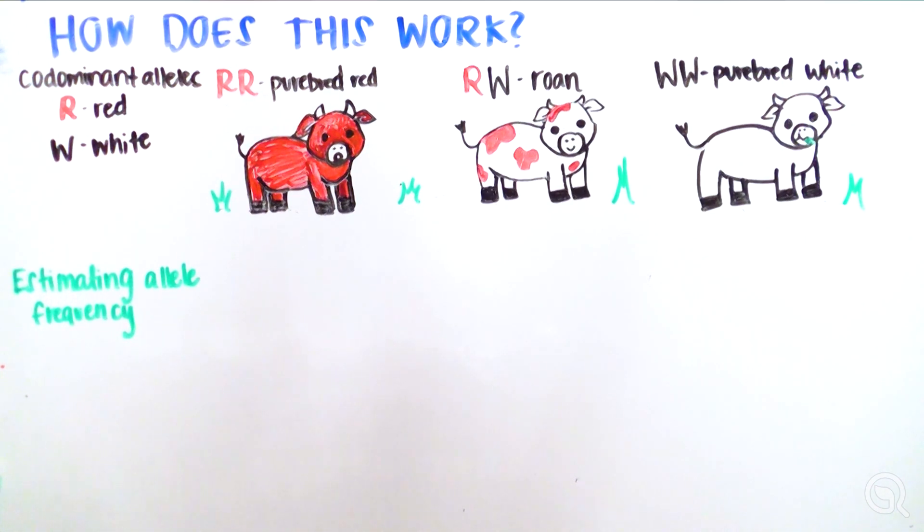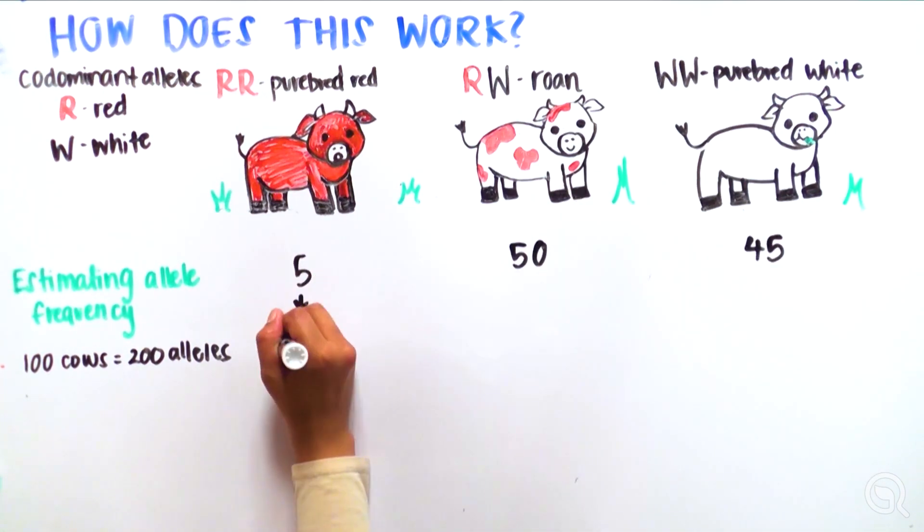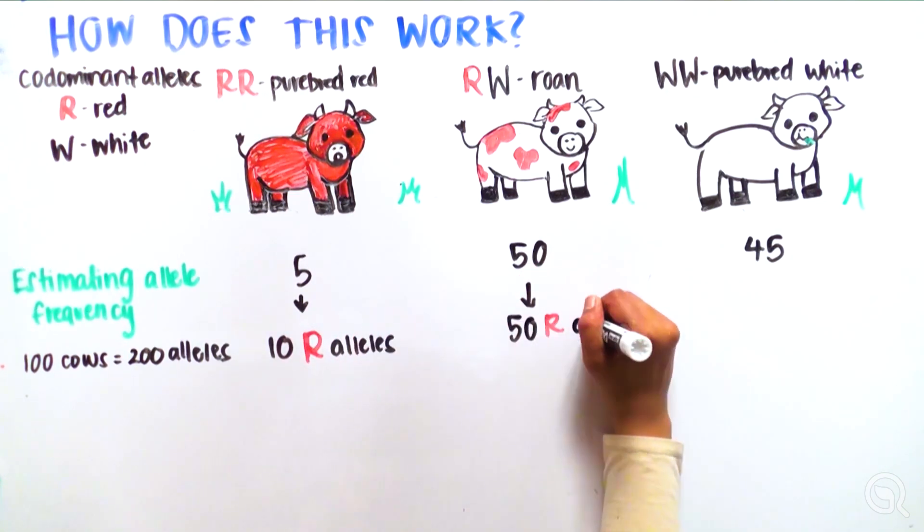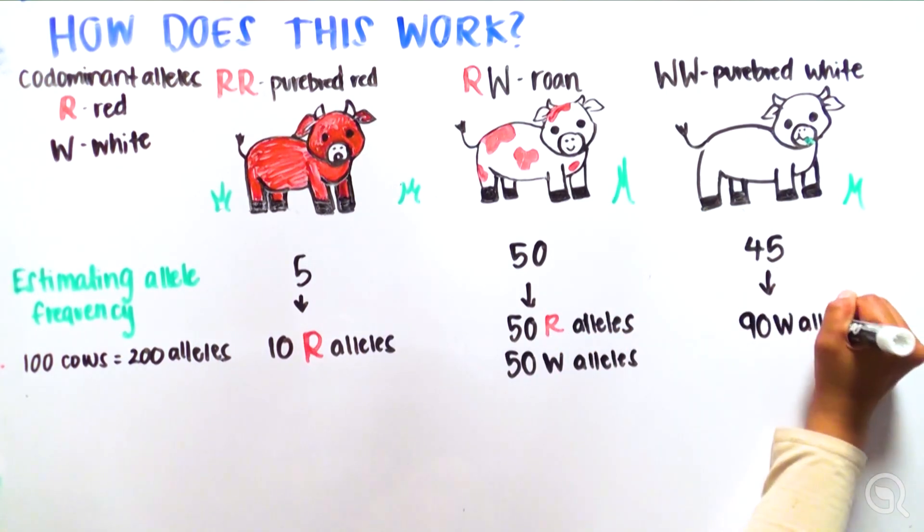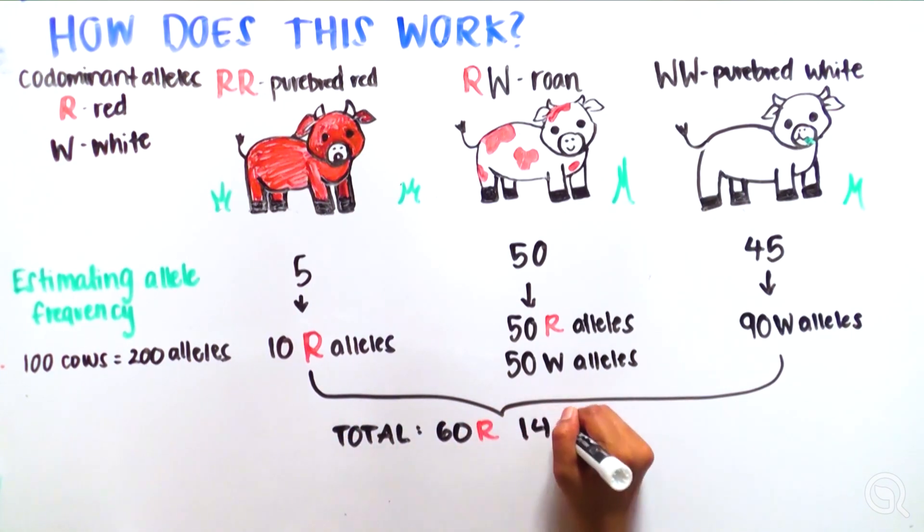In this population, let's say there are 100 cows, each of which have two alleles (R and W) for color, meaning the total number of alleles in the population is 200. Within this population, we observe 5 RR (red) cows (10 R alleles), 50 RW (roan) cows (50 R alleles plus 50 W alleles), and 45 WW (white) cows (90 W alleles).